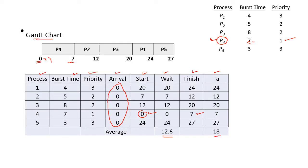For the second priority, two processes come under second priority — P2 and P3. As per first come first serve, we have to select P2 to execute first because P2 arrives first. The burst time of P2 is 5, so 7 plus 5 equals 12. The starting time is 7 and finish time is 12 for process 2.